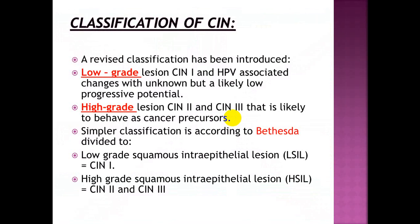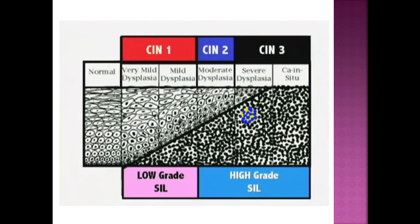A revised CIN classification has been introduced: low-grade lesion includes CIN 1 and HPV-associated changes with likely low progression potential. High-grade lesions include CIN 2 and CIN 3, likely to behave as cancer precursors. The Bethesda classification divides lesions into low-grade squamous intraepithelial lesion (LSIL), corresponding to CIN 1, and high-grade squamous intraepithelial lesion (HSIL), corresponding to CIN 2 and CIN 3. CIN 1 represents mild or very mild dysplasia, CIN 2 moderate dysplasia, and CIN 3 severe dysplasia or carcinoma in situ.